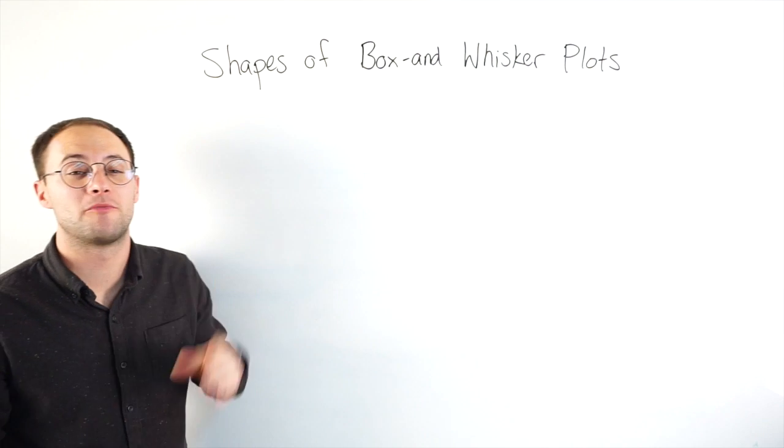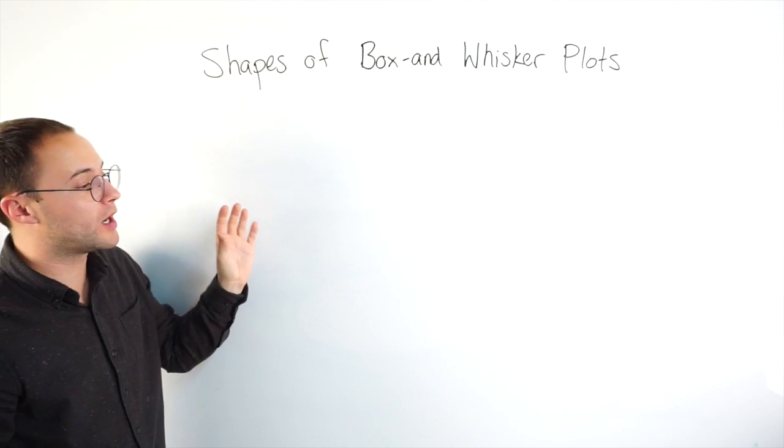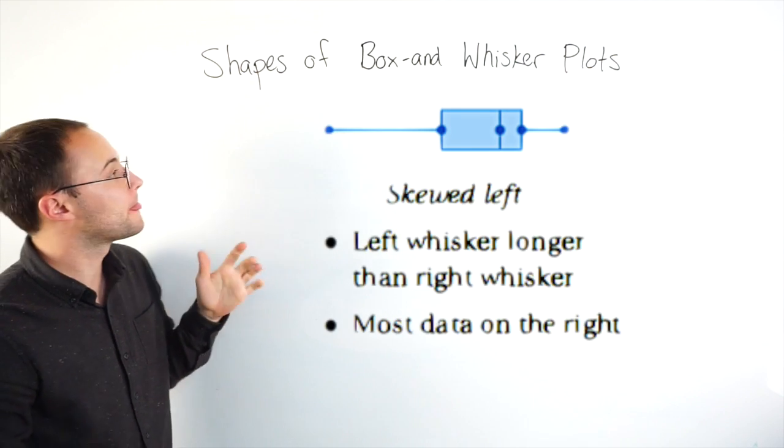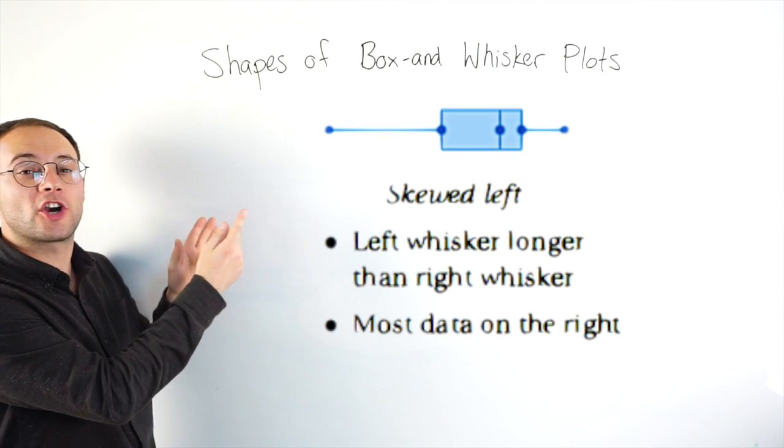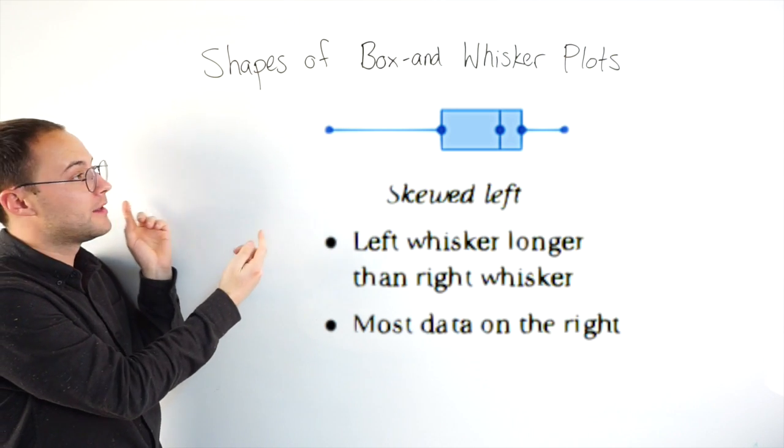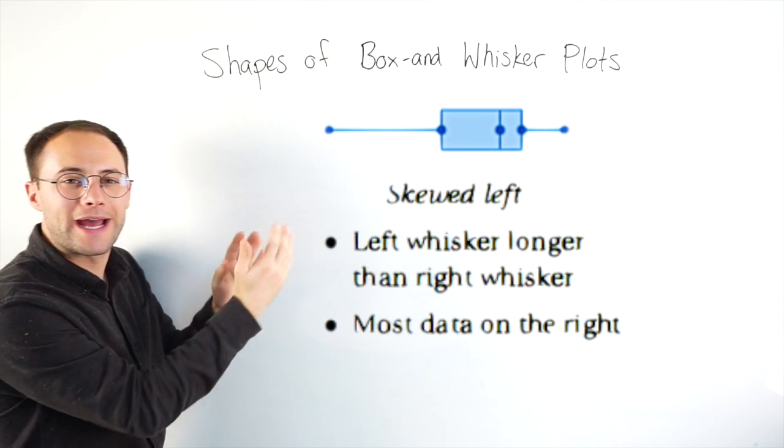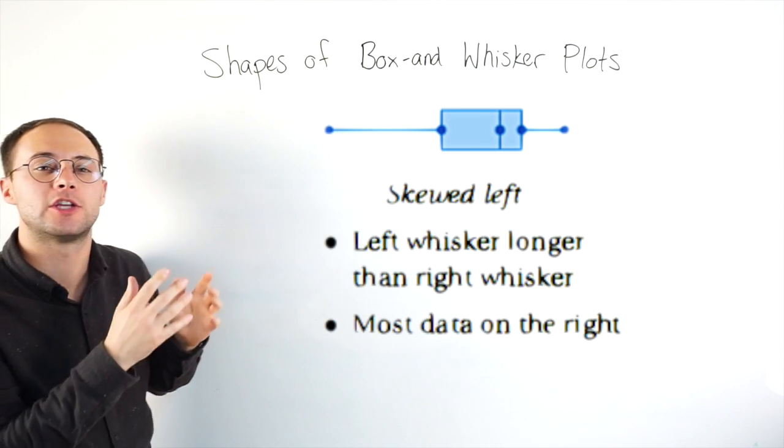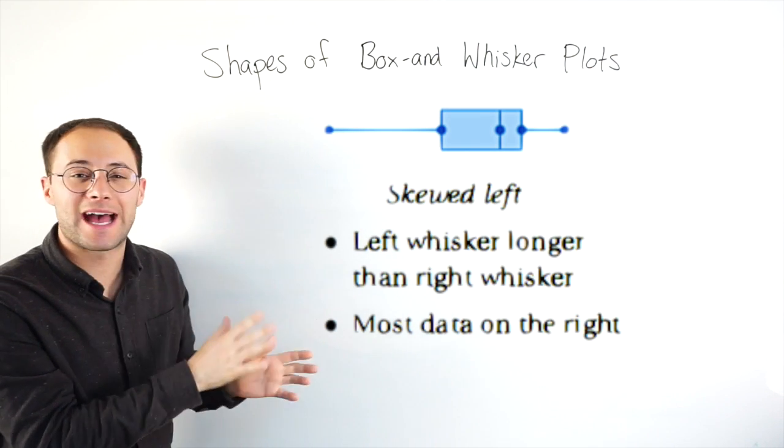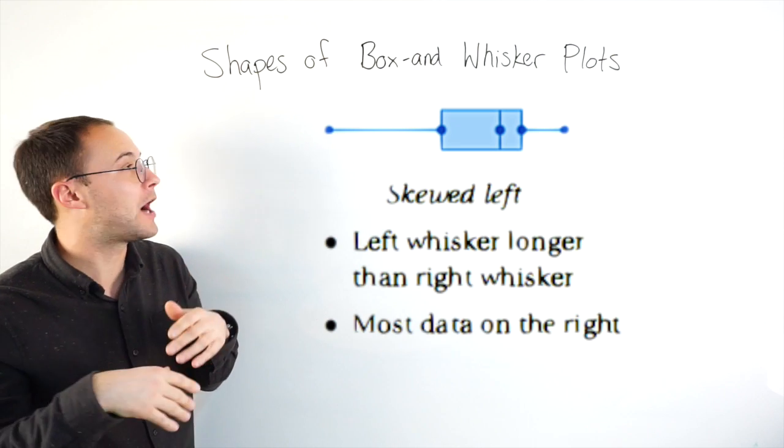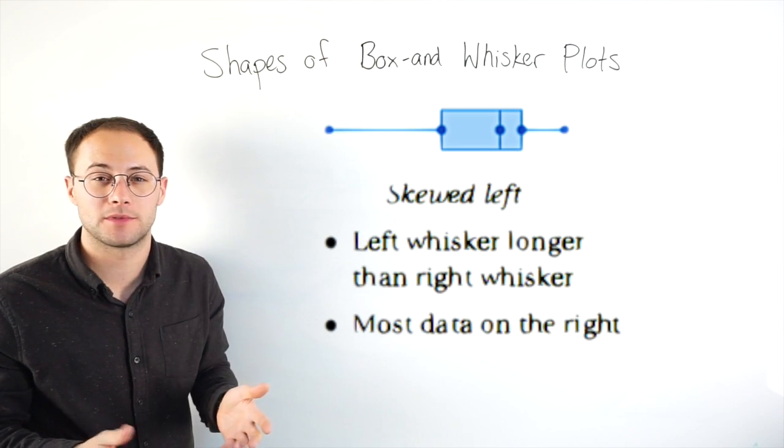Lastly, we're going to talk about the shapes of box and whisker plots. The first one is called skewed left. And if you notice, the whisker on the left is longer than the whisker on the right, and more of the data is on the right side. We call that skewed left.